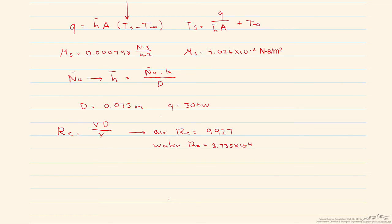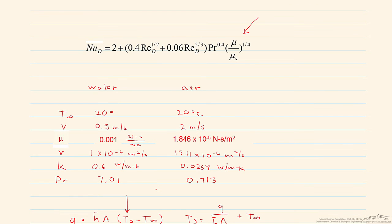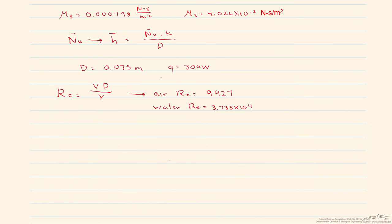Now let's go back to our correlation, and if you notice, everything here is a function of Reynolds or the Prandtl number, except for that ratio of the viscosity of the bulk divided by the viscosity of the surface. We're going to calculate that based on our Reynolds number for both the water and the air.